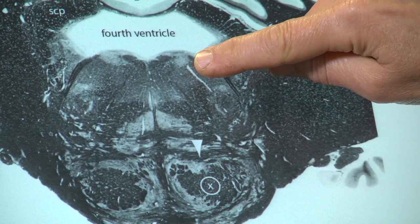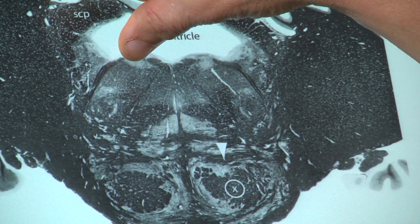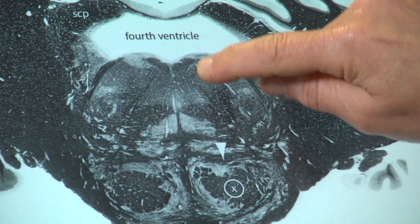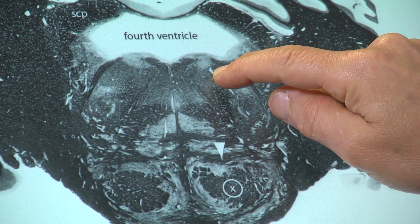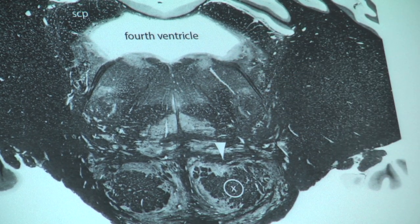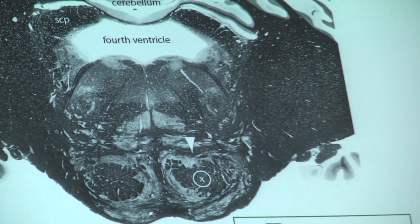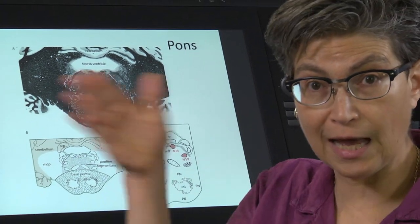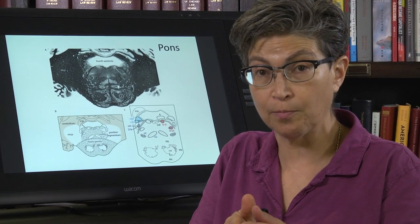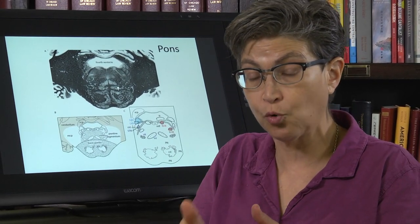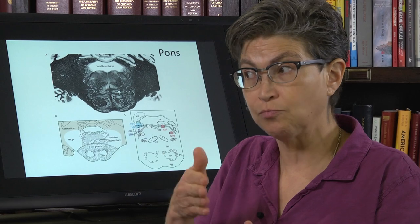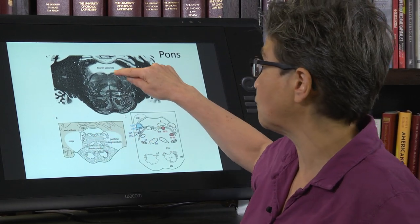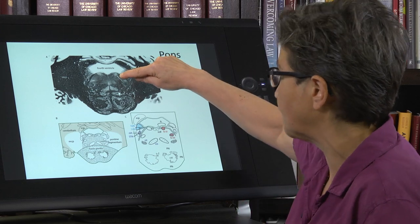Right here, dead at or very close to the midline, this white area is the abducens nucleus. The abducens nucleus innervates the lateral rectus. So the motor neurons that innervate the lateral rectus and support lateral gaze — abducting the ipsilateral eye — come from the abducens nucleus right there.